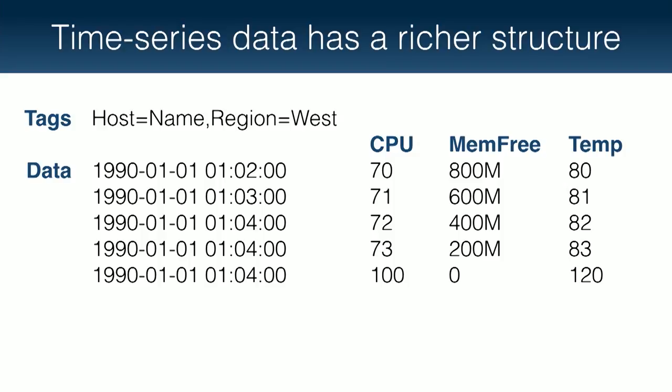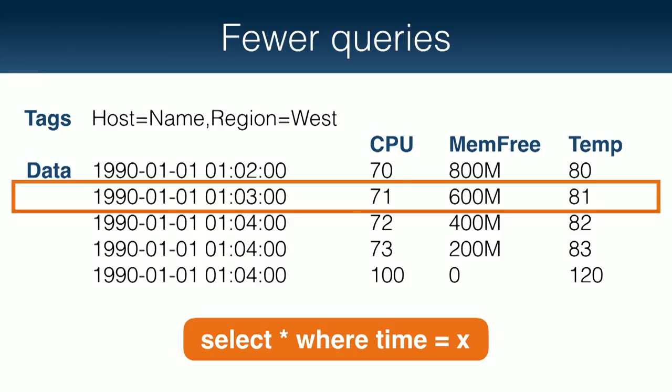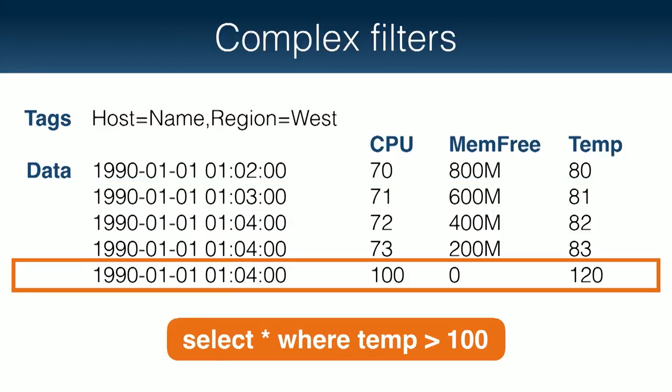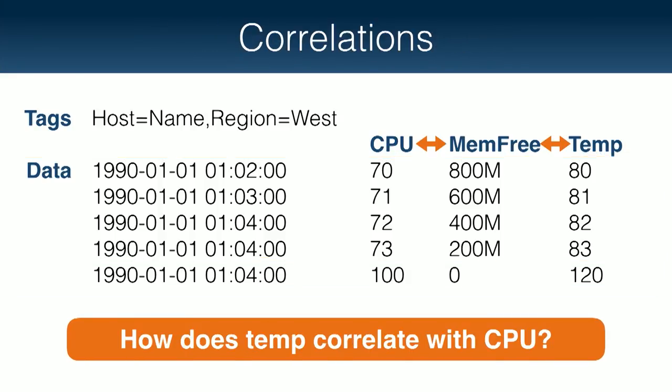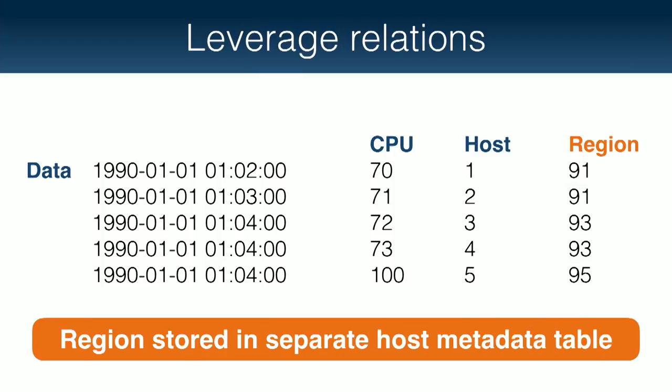We argue that a lot of time series data has a richer structure, and we should be able to leverage that in a narrow model, a wide model, or a schema-less model when it's possible. Once you have that, you can do a lot of interesting things: make fewer queries because you're accessing a wide format, do complex filters and aggregations across your data, and ask correlations between data sets that you would have lost if you had separated them. And often, next to your time series data you have business data or metadata, and you want to join between these two things to ask richer questions.